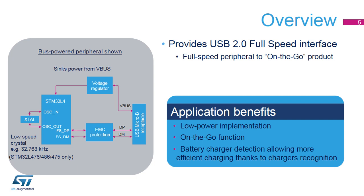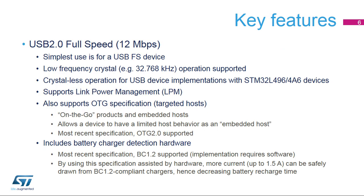Additional features include on-the-go host or device functions and battery charger detection, allowing more efficient charging possibilities. This slide summarizes the key features of this full-speed OTG USB device interface, which is a USB specification 2.0 compliant interface operating at a bitrate of 12 megabits per second. In the simplest form, a full-speed USB device can be implemented. Low-frequency crystal operation is possible, and STM32L49X4A6 devices can work crystal-less.